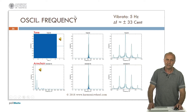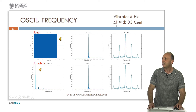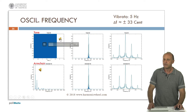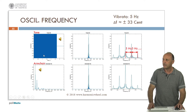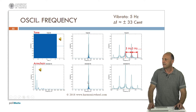Now let's consider an oscillating frequency: a vibrato of 5 Hertz and a variation in frequency of plus or minus 33 cents. Now the spectral lines contain several smaller lines, 5 Hertz apart, as in the vibrato frequency. In the case of the armchair, we have several lines, each of them equal to the one in the tone.